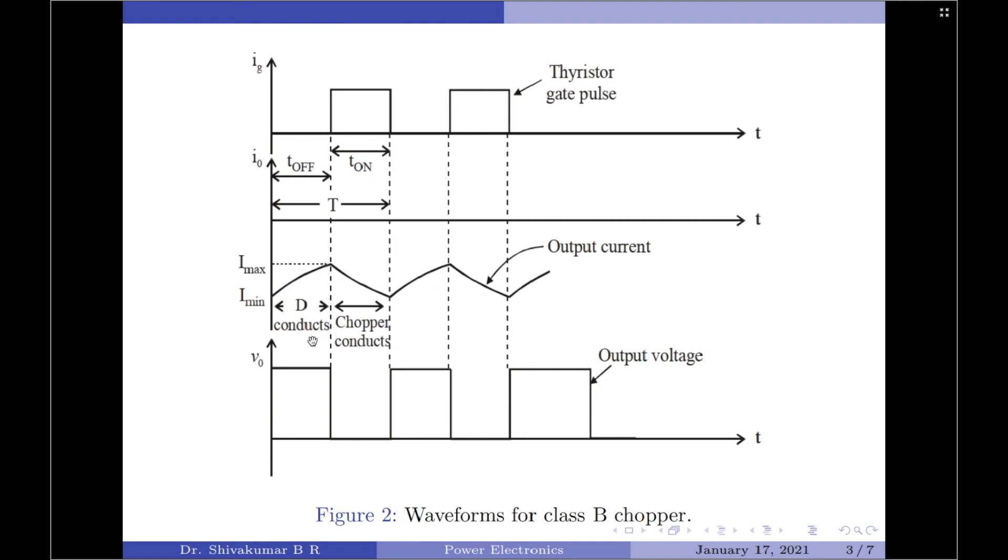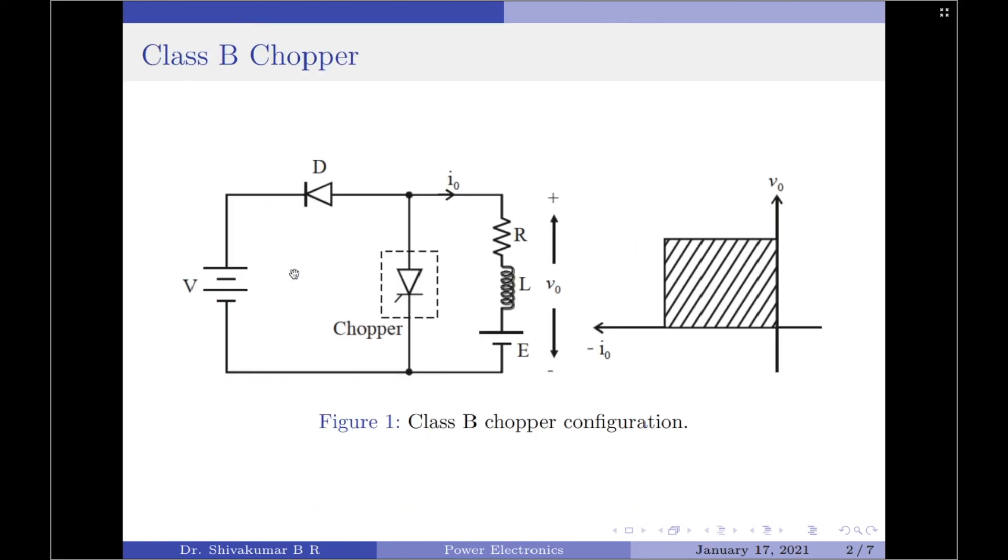For a class B chopper, we note that the output voltage is always positive whereas the output current is negative. This is the reason why we obtain the second quadrant operation. In the quadrant diagram, we note the y-axis is the output voltage and the x-axis is the load current. That is why we get a second quadrant operation.